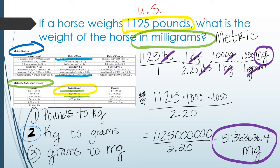Remember, we expected a very large number — 511,363,636.4 milligrams. It's such a large number because the unit is so tiny. It takes that many milligrams to make up the weight of a very large horse.